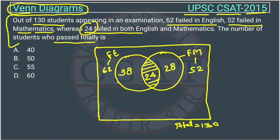This is representing the number of failed student. 38 is representing failed in English, 28 is representing failed in math and this 24 is representing failed in both. And this outside will be what? They are passed.